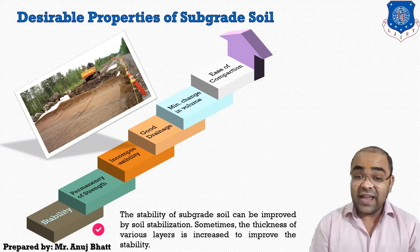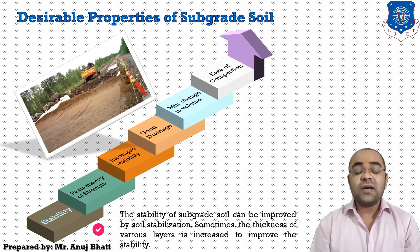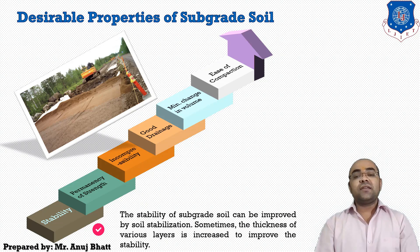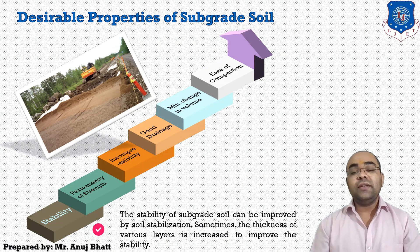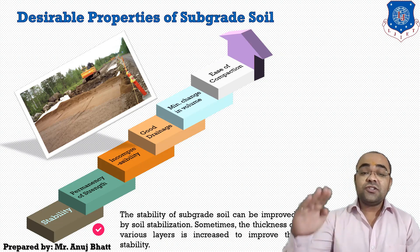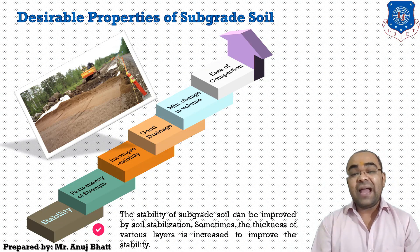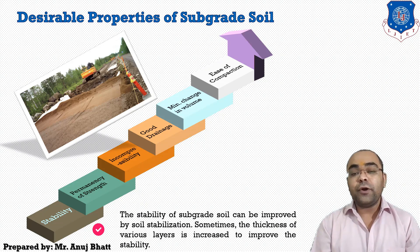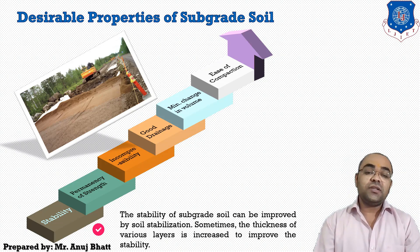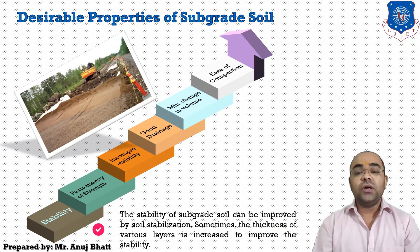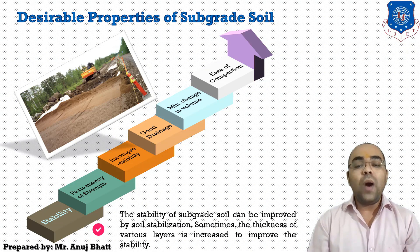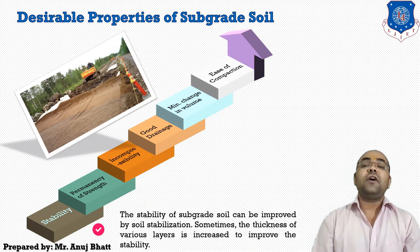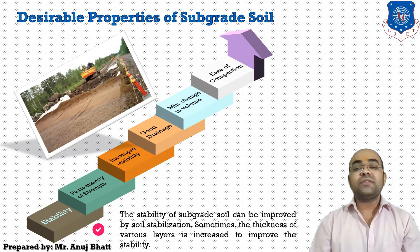The stability of subgrade soil can be improved by soil stabilization. Sometimes the thickness of various layers is increased to improve the stability of the soil or that particular structure. When a road is constructed in an embankment, the factor of safety for slope stability should be considered as 1.5. As per the IRC (Indian Road Congress) recommendation, the side slope for road in embankment is 1 in 2 — that is 1 vertical to 2 horizontal. In cutting, a slope of 1 to 0.5 is provided. So this is all about the stability of the subgrade soil.